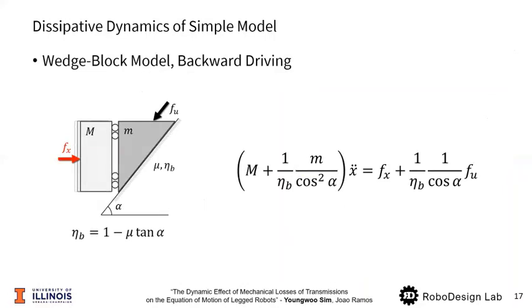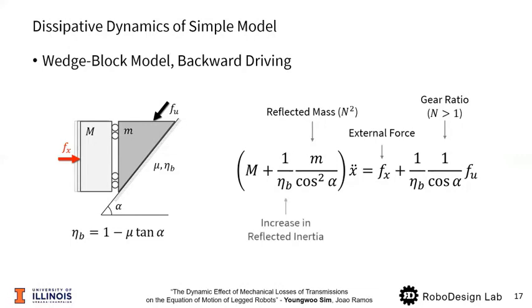Let's take a look into the result, the dynamics of back-driving case, and make some observations. First, we see external force back-driving the system, gear ratio, and reflected inertia. Next, it gets interesting. We see backward efficiency is contributing to increase in both reflected inertia and input force or unmodeled force on the wedge. Finally, I want to note that there's a limiting case where backward efficiency is zero. If the slope is too steep, the system becomes non-backdrivable. This phenomena is rendered by infinite mass in the equation of motion. To summarize this observation, efficiency affects inertia and the force propagation.